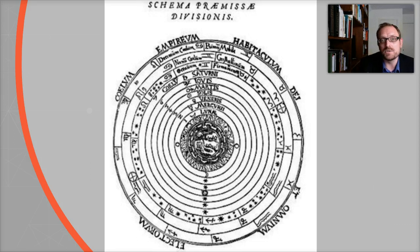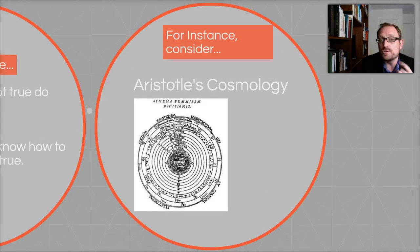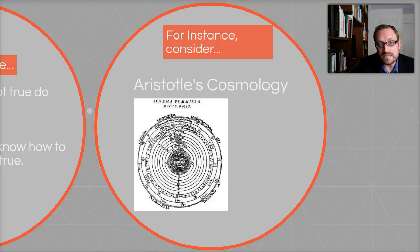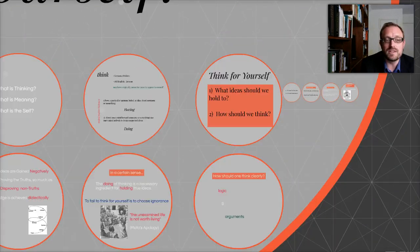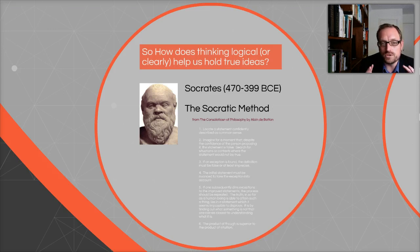Our heliocentric model is organized mathematically, around the idea that the planets are revolving around the sun and the moon around the Earth. Even someone who is extremely brilliant — like Aristotle — can be wrong. So it's really imperative that we recognize that it's essential we think for ourselves.